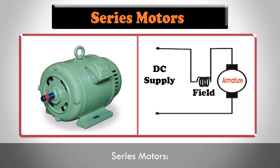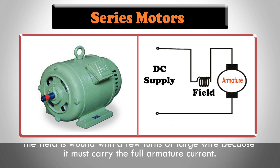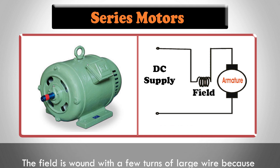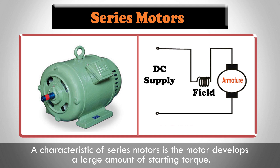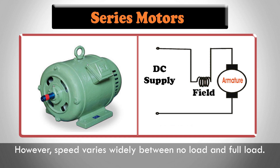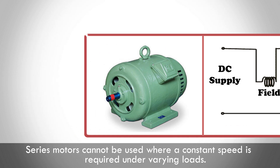Series motors. In a series DC motor, the field is connected in series with the armature. The field is wound with a few turns of large wire because it must carry the full armature current. A characteristic of series motors is that the motor develops a large amount of starting torque. However, speed varies widely between no load and full load. Series motors cannot be used where a constant speed is required under varying loads.